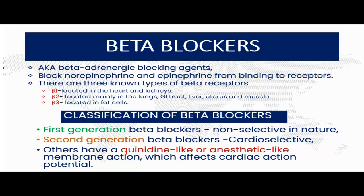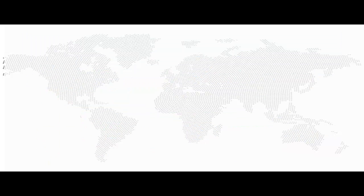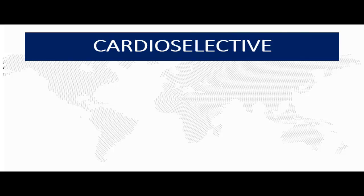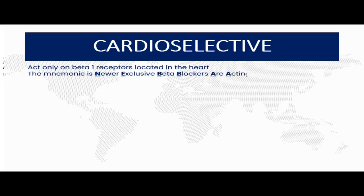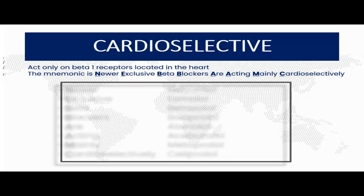We also have third generation beta blockers. Let's start with the cardioselective beta blockers. Cardioselective beta blockers only work on beta-1 receptors located in the heart. The mnemonic to help you remember these is: NEBA — exclusive beta blockers are acting mainly cardioselectively. Let's break down this mnemonic.